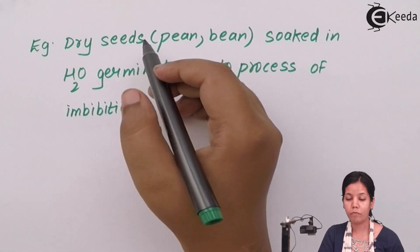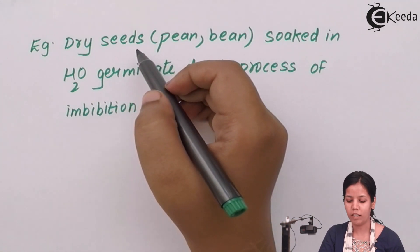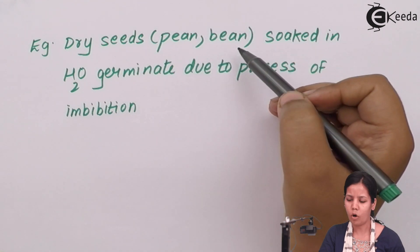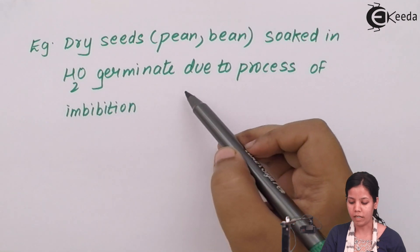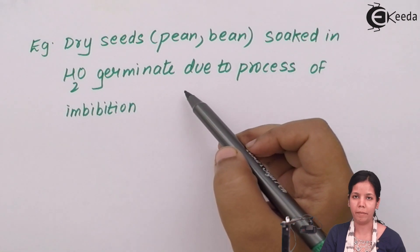An example of imbibition in real life would be dry seeds of bean or pea which are soaked inside water. They will germinate due to the process of imbibition.